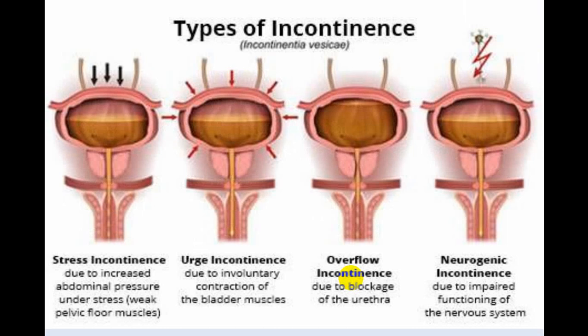In stress incontinence, there is a decrease in urethral closure pressure. Whenever there is increased intra-abdominal pressure, this will produce contraction of the detrusor muscle, and there is weakness in the pelvic floor producing decreased tone in the internal and external sphincters. When the pelvic floor is affected it involves the external sphincter and will produce incontinence.